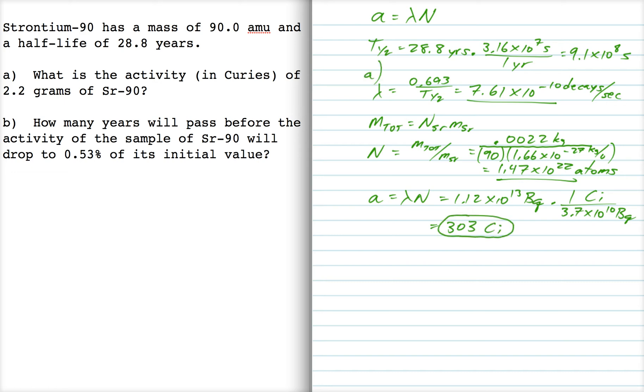Alright, so that's part a. Part b: How many years will pass before the activity drops to 0.53% of its initial value? So our equation for this is a equals a naught e to the minus lambda t, and in this case we're told that a over a naught is 0.53%, or 0.0053.